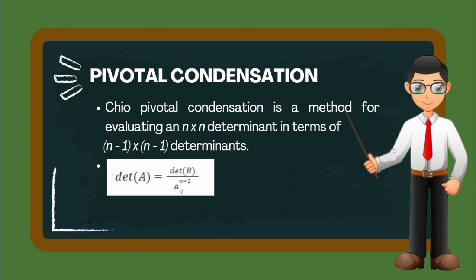The method is repeated on the (n-1)×(n-1) determinant to reduce it to an (n-2)×(n-2) determinant in much the same way. Continuing in this manner, the original determinant is eventually reduced to a single number which represents the determinant of the original matrix.